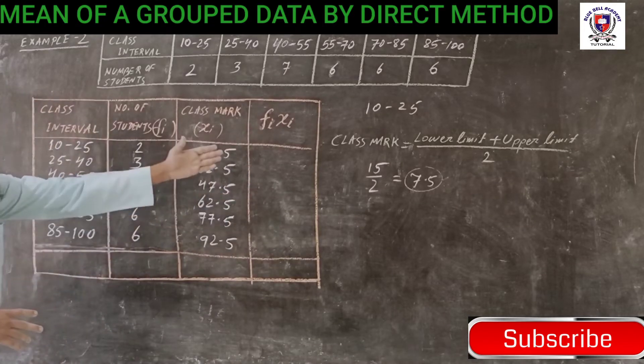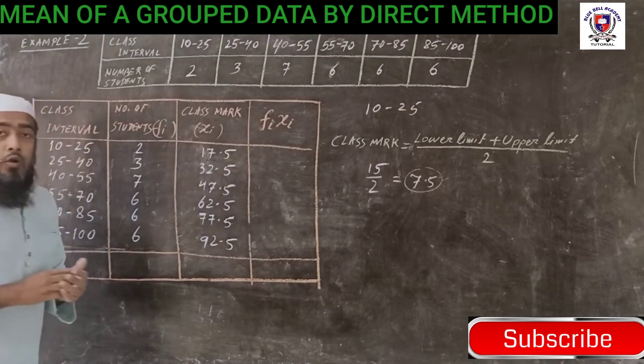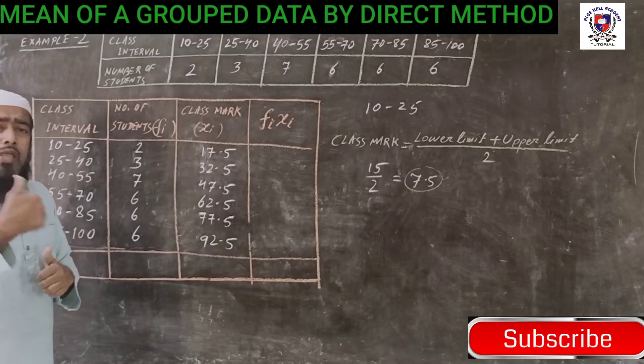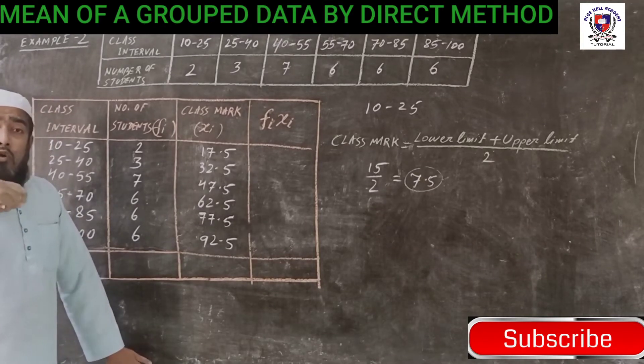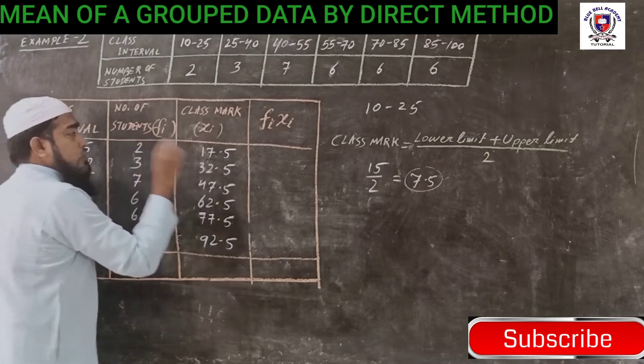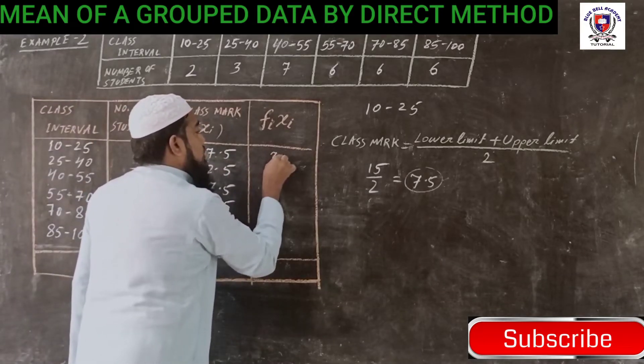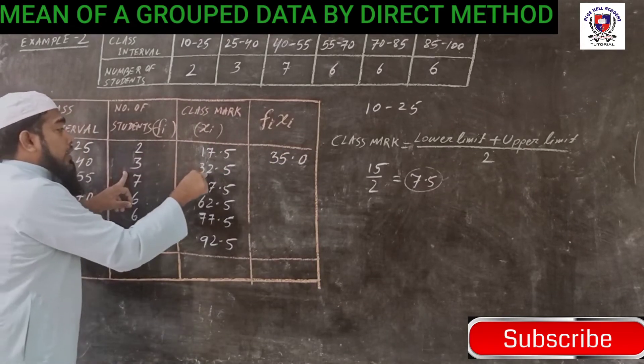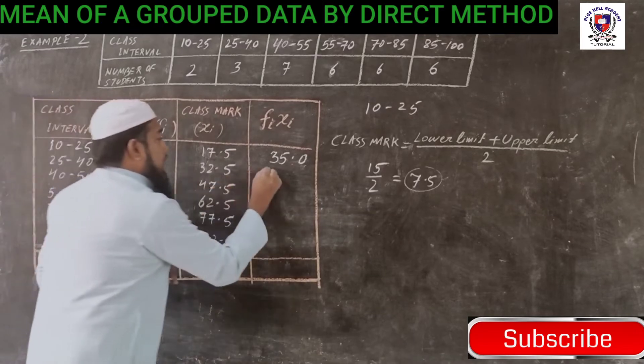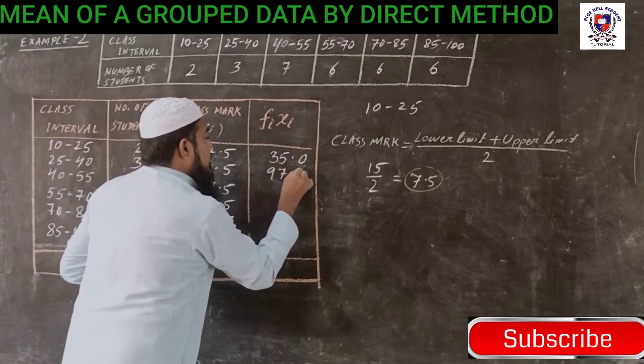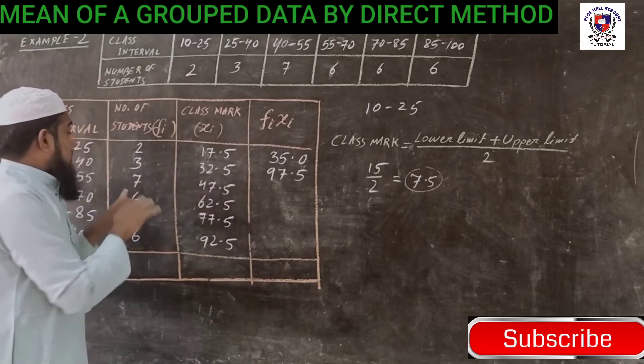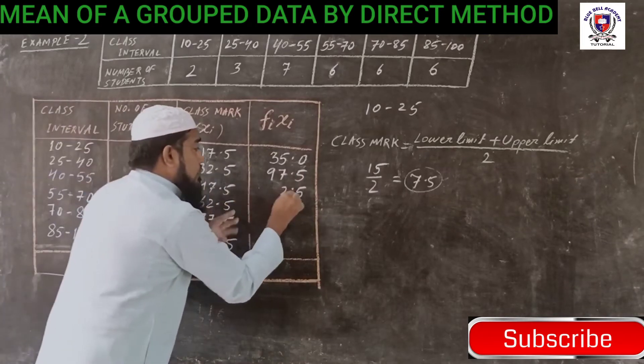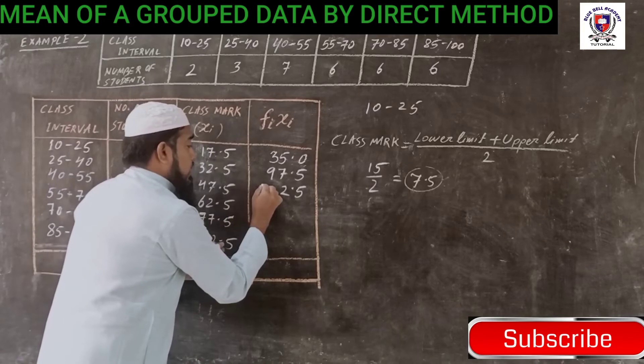Now the next part, we have to find fi times xi. So these two should be multiplied. My suggestion for 10th class students: prepare more and try to do direct multiplication. 17.5 times 2 is 35.0. I am writing 0 because for some answers we will get 0.5. Now 32.5 into 3 will be 97.5. And 47.5 into 7: 7 times 5 is 35, 3 carry. 7 times 7 is 49 plus 3 is 52, 5 carry. 7 times 4 is 28 plus 5 is 33. So 332.5.